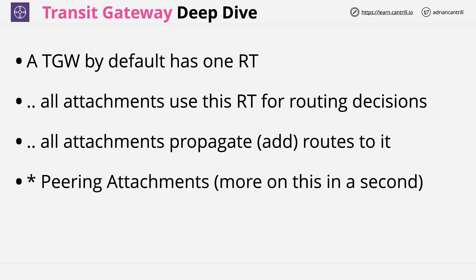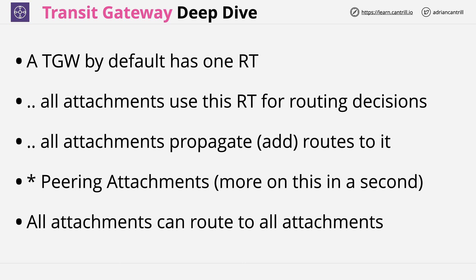With this kind of configuration — one default route table, associated with every attachment, and every attachment propagating to it — it means that all attachments can route to all other attachments on a single Transit Gateway. This is the default configuration.